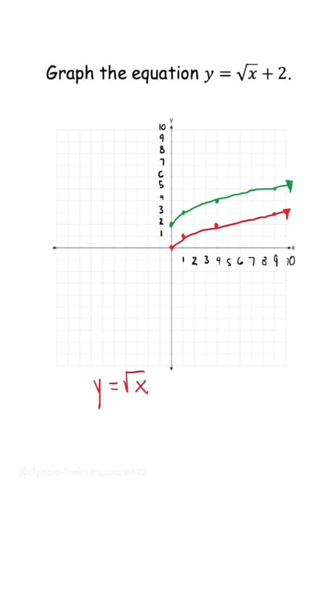Now let's say you're someone who isn't familiar with the parent graph, you could just use a table. And you want to use x's that are easy to work with or that are perfect squares. So we're talking about 0, 1, 4, and 9.